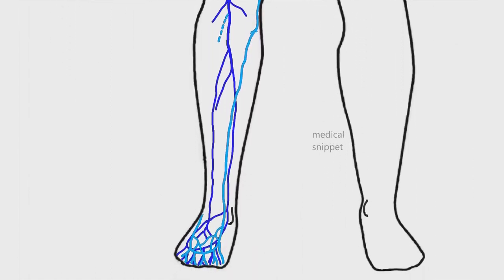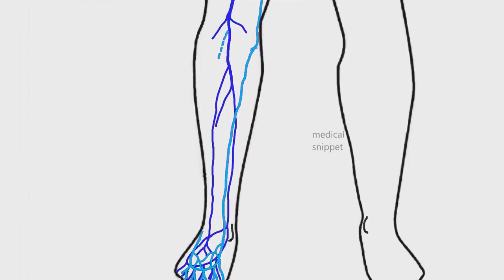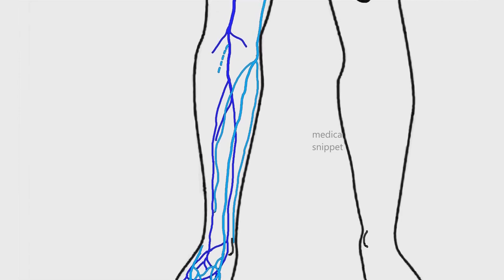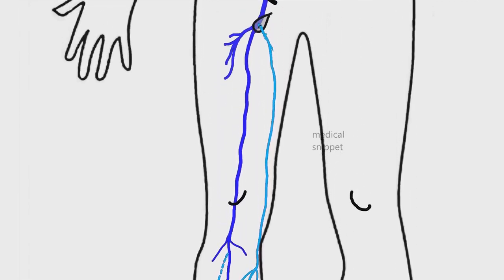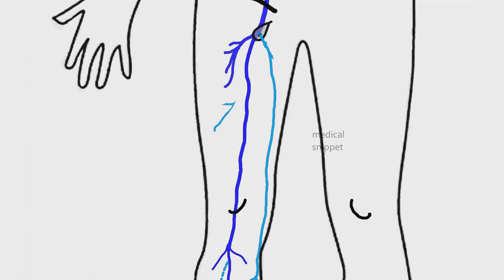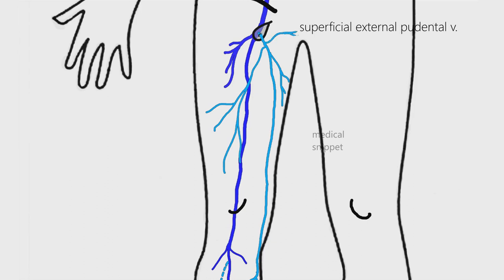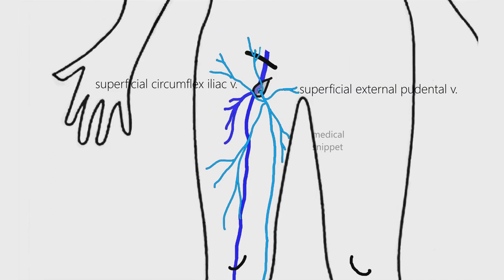The tributaries of the greater saphenous vein in the leg are mainly two: the anterior venous tributary and the more constant posterior arch vein. In the thigh, it receives two large tributaries just before emptying into the common femoral vein: the lateral accessory and medial accessory saphenous veins. The lateral accessory saphenous vein is almost always present. In addition, it also receives small tributaries like the superficial external pudendal vein, superficial circumflex iliac vein, and superficial epigastric vein.